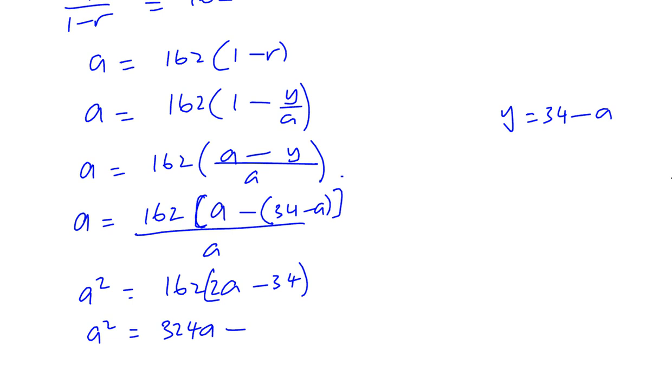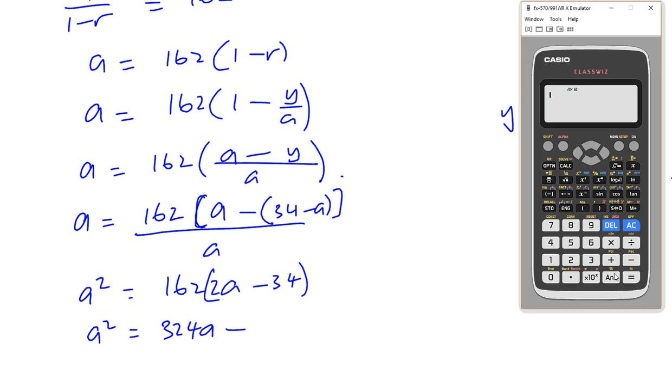Let's just use a calculator for that. So we'll make sure 162 times 2, 324A, yes. And then you've got 162 times 34 or negative 34. Negative 5,508.